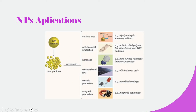Nanoparticles have improved surface area, which is used for example in highly catalytic gold nanoparticles. As you know, gold in bulk form is inert, but when you break gold into nanoparticles, these nanoparticles have high catalytic activity.